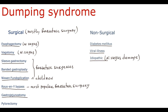With gastrojejunostomy, as already mentioned with Roux-en-Y gastric bypass, bypassing the duodenum causes malabsorption with formation of hypervoluminous chyme, and also impairs the duodenal feedback mechanism, leading to rapid gastric emptying. Pyloroplasty disrupts the function of the pyloric sphincter, and pylorectomy removes the pyloric sphincter. These two surgeries significantly affect gastric emptying function and gastric reservoir function. Essentially, all these surgeries cause rapid gastric emptying.